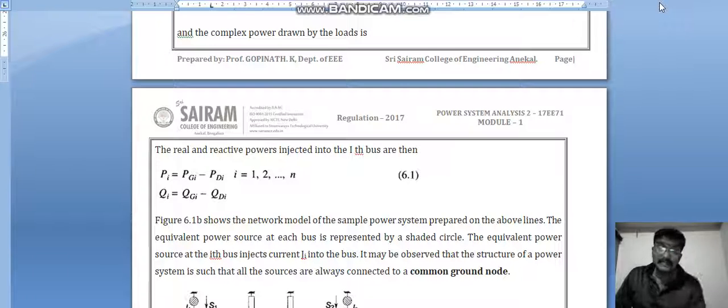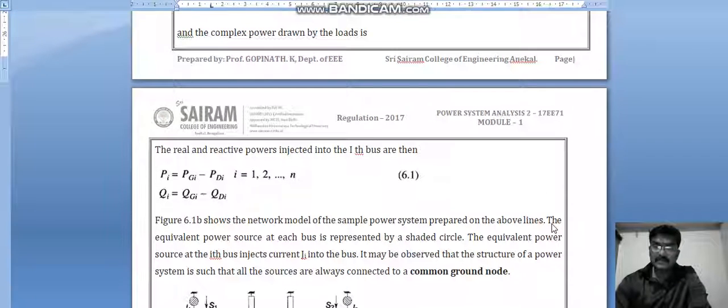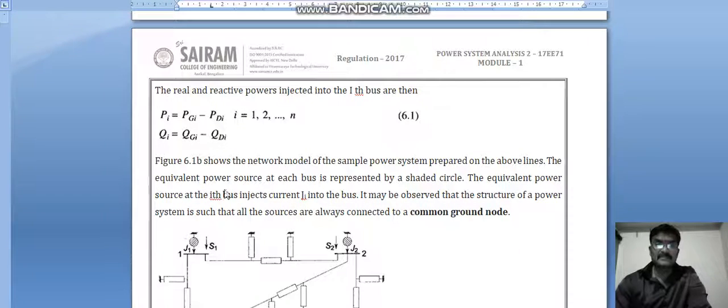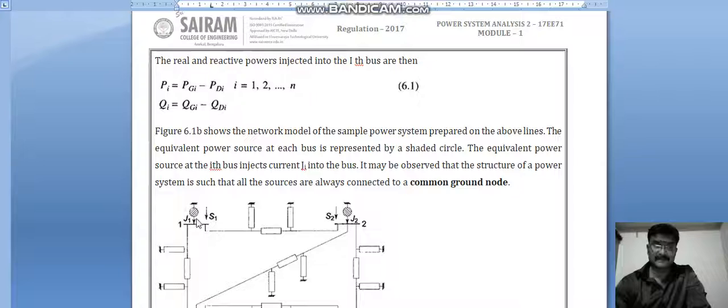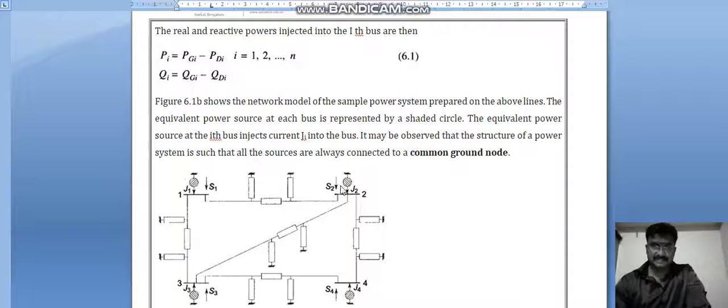Figure 6.1b shows the network model of the sample power system prepared on the above lines. The equivalent power source at each bus is represented by shaded circles. The equivalent power source on the ith bus injects current I1 into the bus.